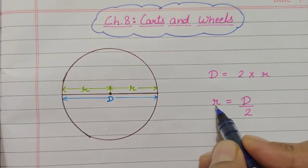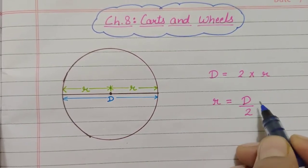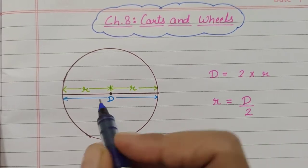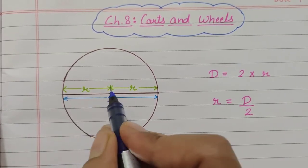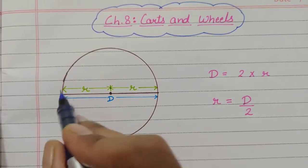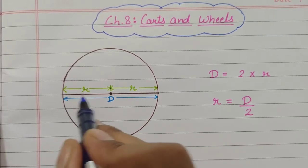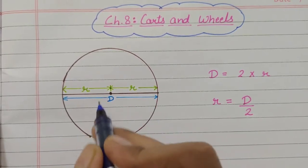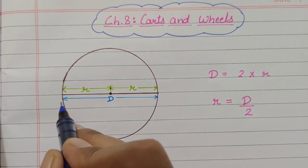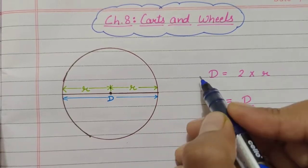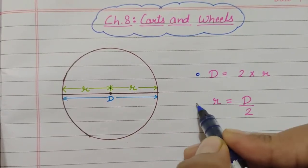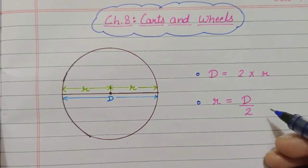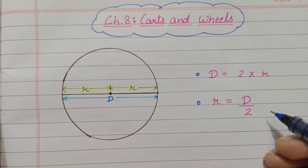Similarly, radius is half of a diameter. Radius is half of a diameter — radius is just half the distance of the diameter. So, here we have these two formulas and we are going to use them to solve the questions.